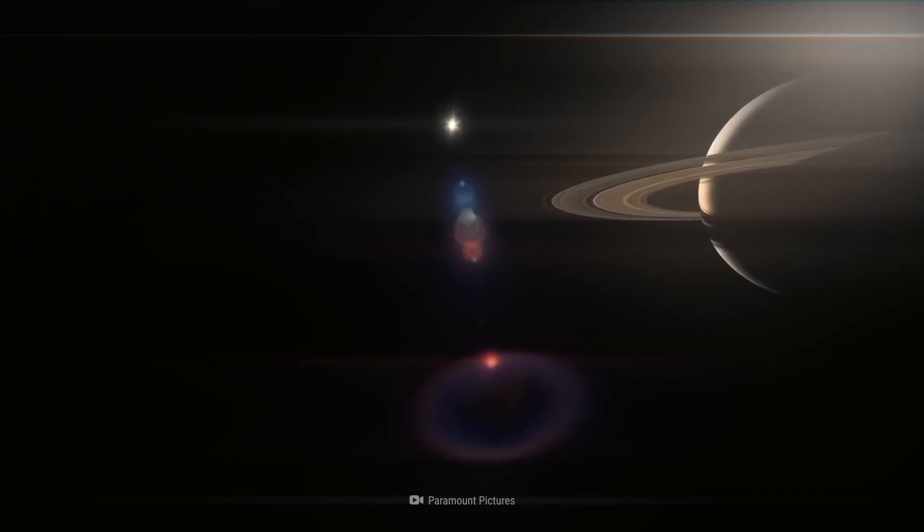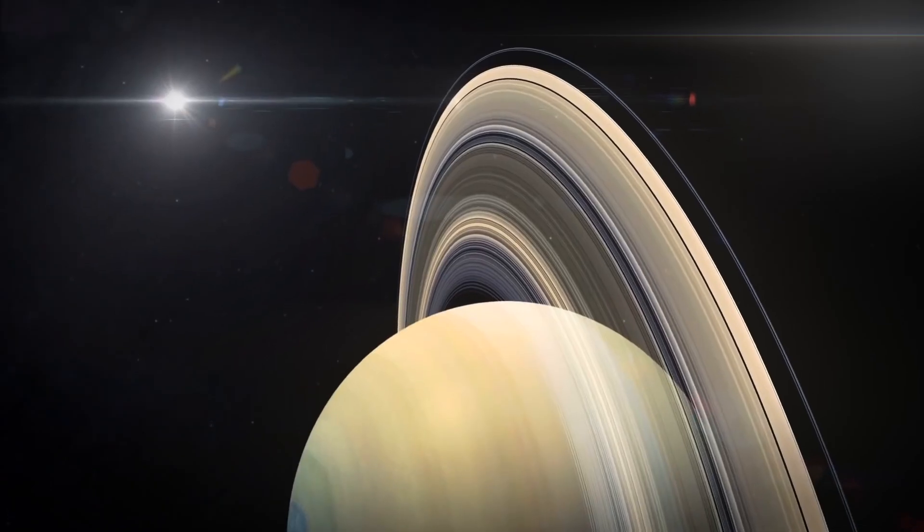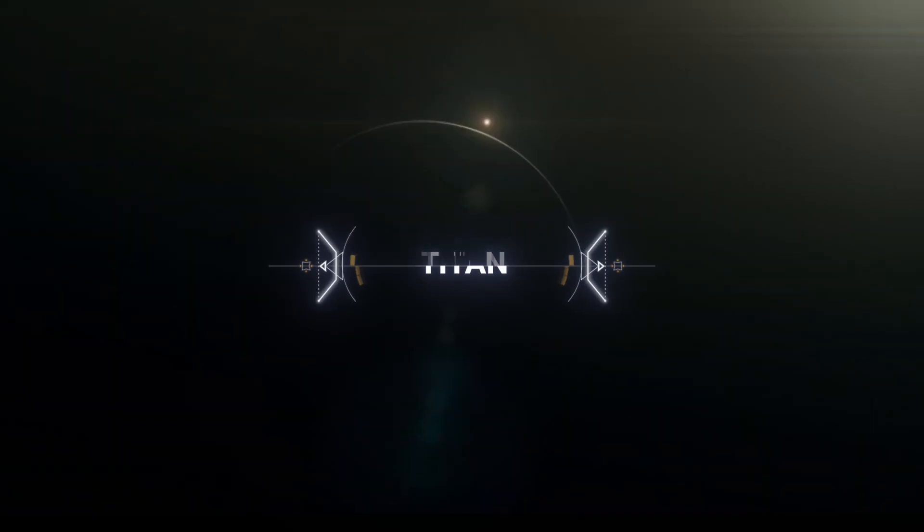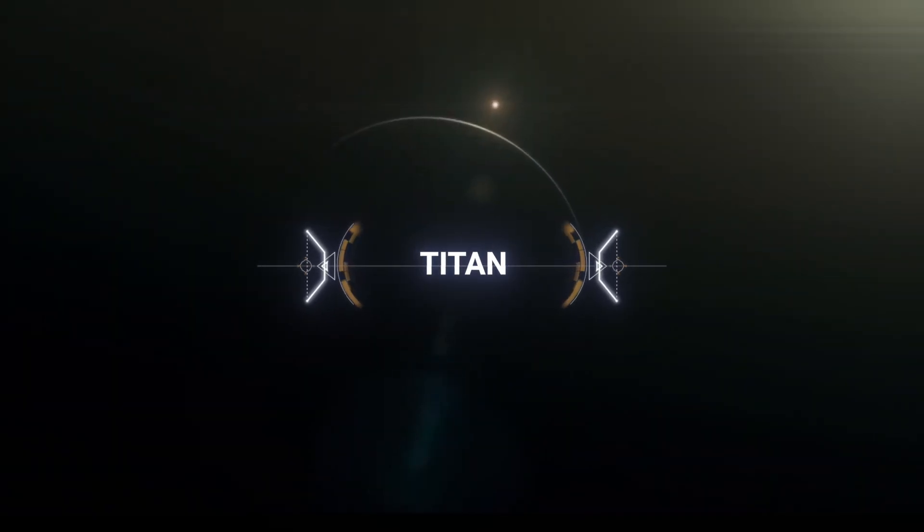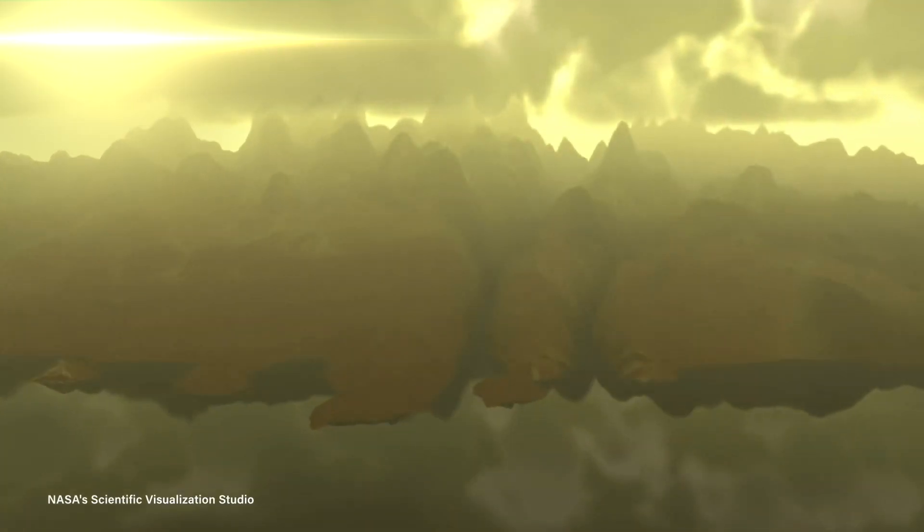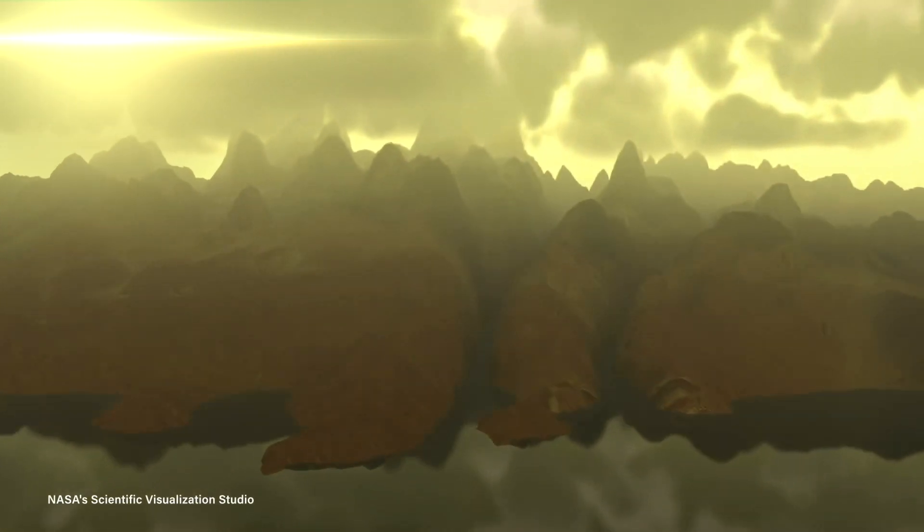For the next location on our list, we will travel to the planet just beyond Jupiter, the ringed planet Saturn. Saturn's largest moon is called Titan. From above, the moon is shrouded in the thick, orange haze of its atmosphere. The atmosphere is made mostly of nitrogen and methane, obscuring the entire surface from view.